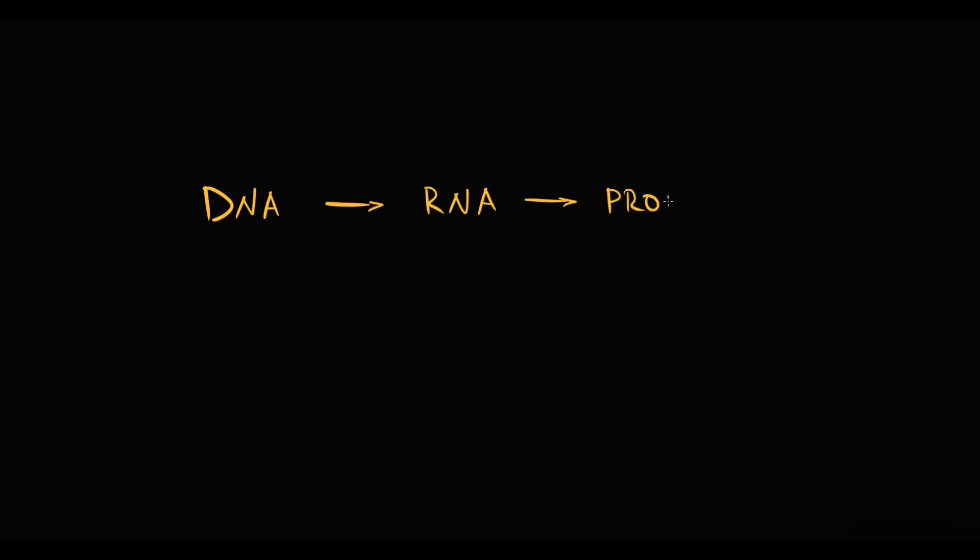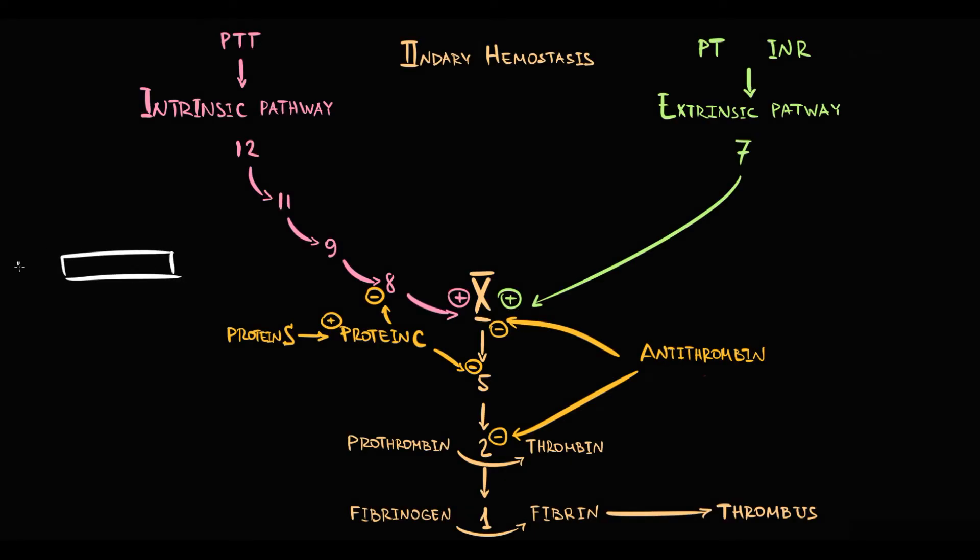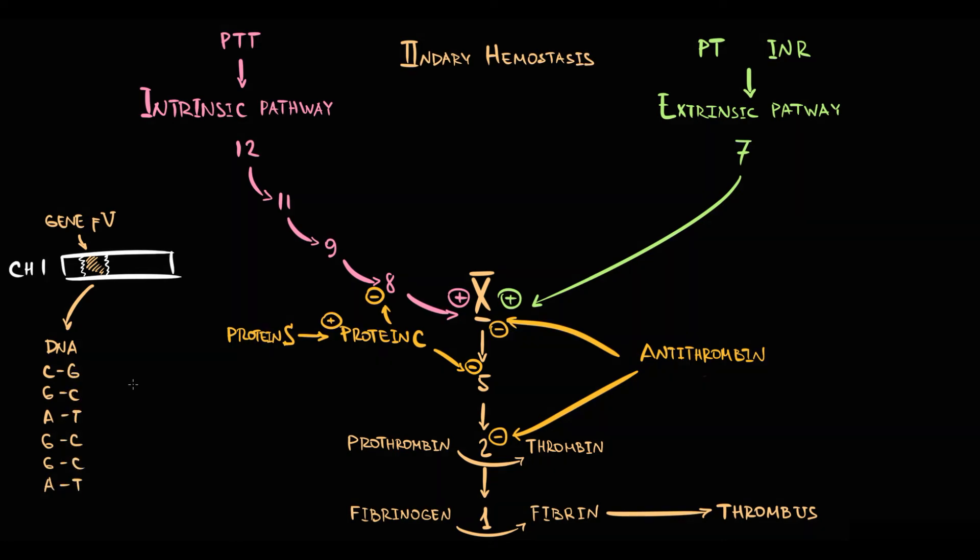To explain this, recall that the central dogma of molecular biology DNA-RNA protein. Basically this dogma tells that the genetic information in DNA has to be copied to RNA molecule and carried to ribosomes where proteins produced. So initially we have a chromosome 1, and on this chromosome located gene that encodes the production of factor V. Gene is basically a part of DNA molecule, as we know DNA has coding and non-coding strands. And to use this information in the gene, information must be carried to ribosomes where proteins are made.